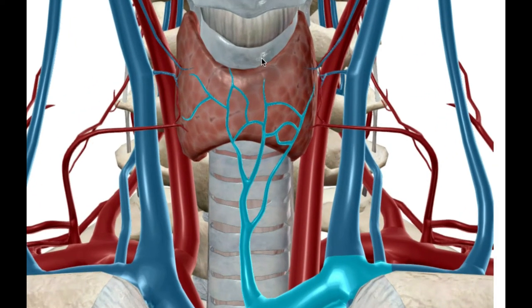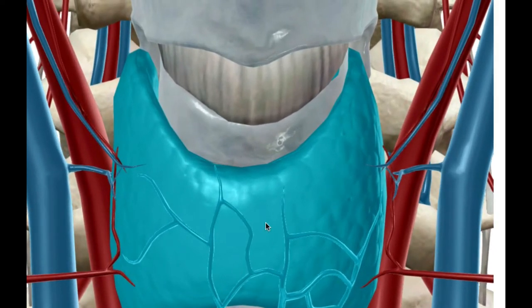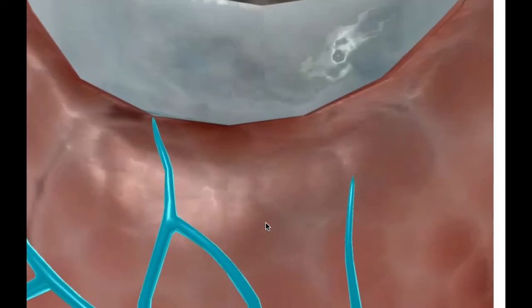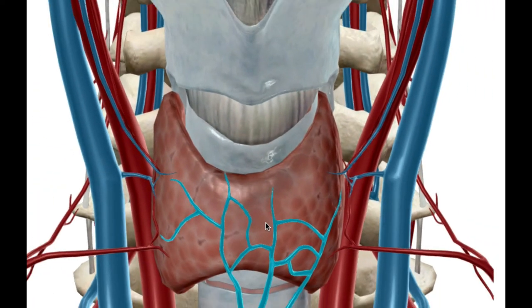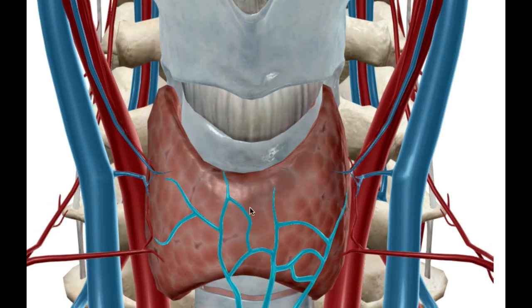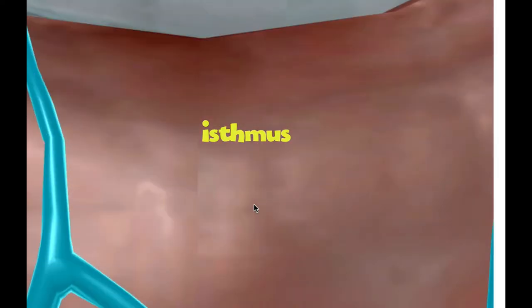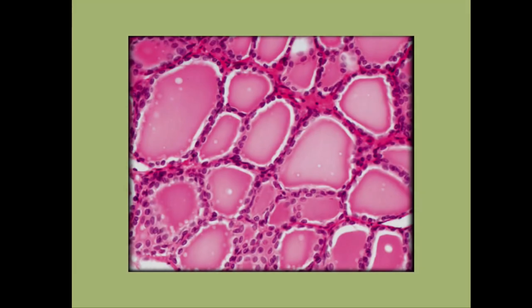Let's return to the thyroid and look more closely. Before we zoom in, note that the thyroid has two major lobes — one on the right and one on the left — that wrap around the trachea. These two lobes are connected by a structure called the isthmus.